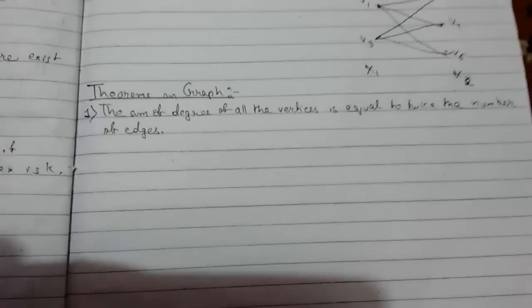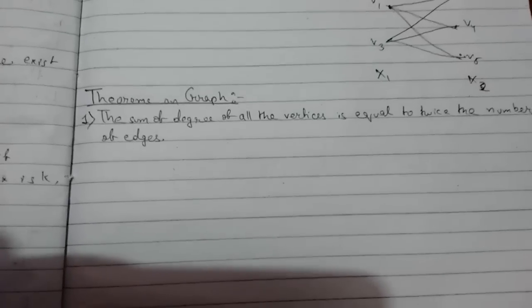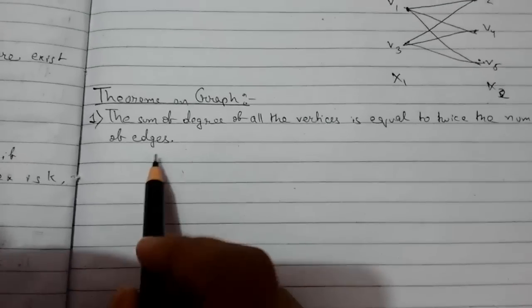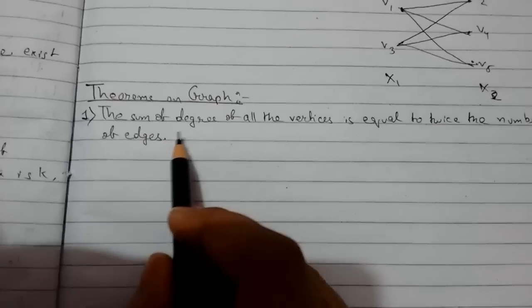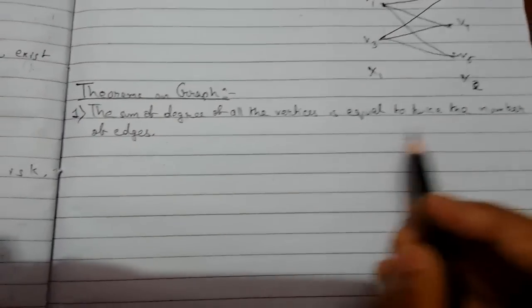I am back guys. Today we will be continuing graph theory. We will be seeing theorems on graphs. The first theorem is: the sum of degree of all vertices is equal to twice the number of edges.